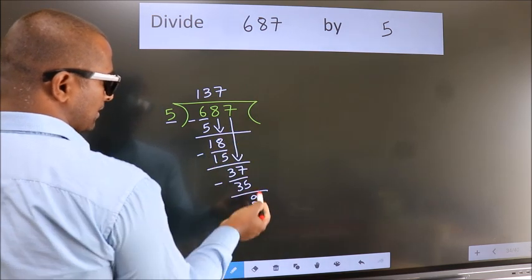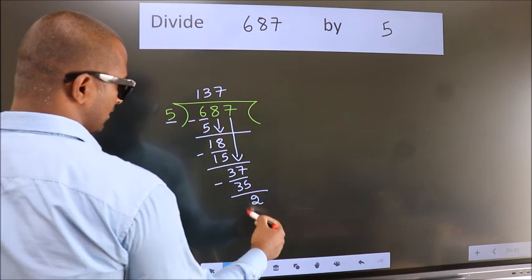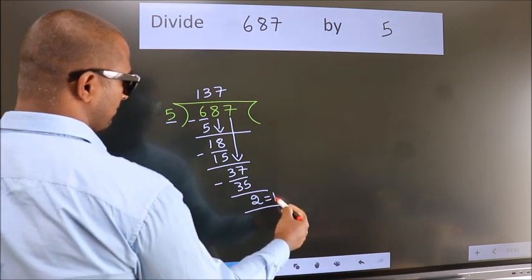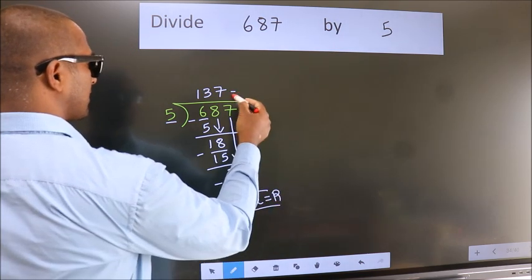No more numbers to bring down. So we stop here. This is our remainder. This is our quotient.